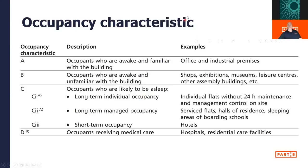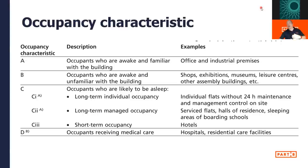The first thing we look at is the occupancy characteristic, which forms part of our risk profile. There are four: A, B, C, and D. Occupancy characteristic A — occupants who are awake and familiar with the building, typically places where people are employed, such as office and industrial premises. These people are trained, told what to do in the event of fire, and are pretty disciplined. They hear a fire alarm test every week, go through fire drills every year or six months, and know where the fire assembly point is.